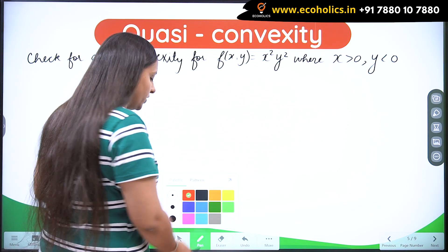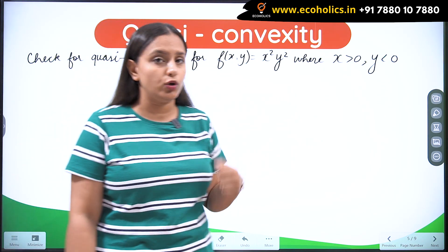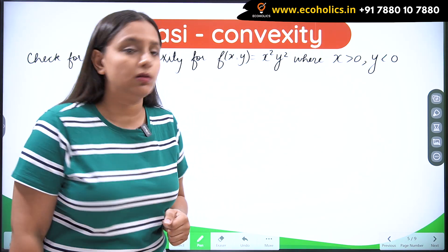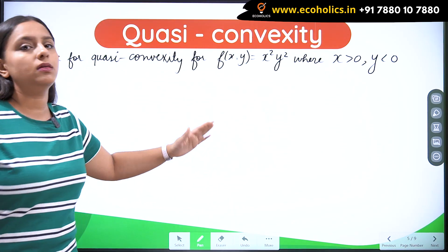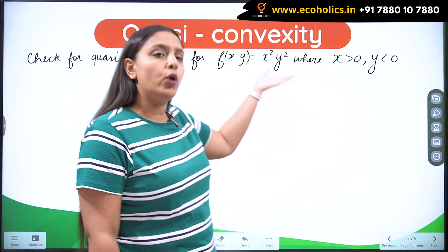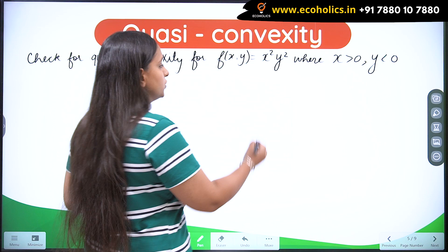So in the concept videos, I have already taught you two methods. One is graphical and another one is mathematical method. So using the mathematical method, I am going to proceed for this. So let me first formulate the bordered Hessian matrix for this function over here.